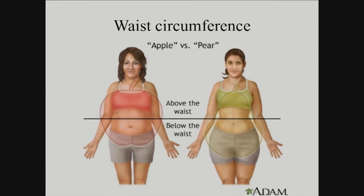So the current way is BMI — doctors do that right now. It obviously has its flaws. So what are some other ways that people are proposing? Like, this is the way we really should maybe be measuring for obesity and health risk.